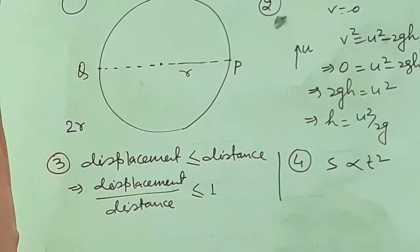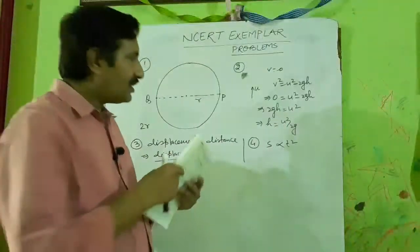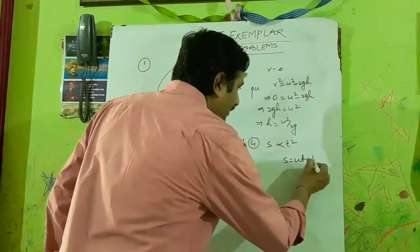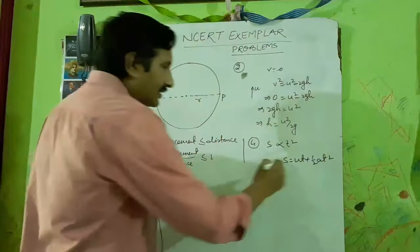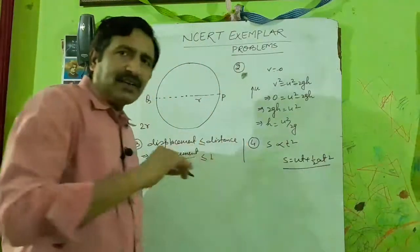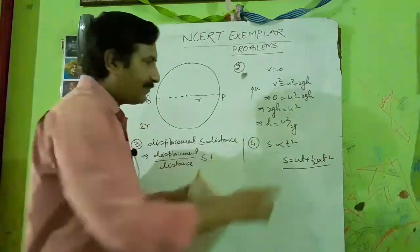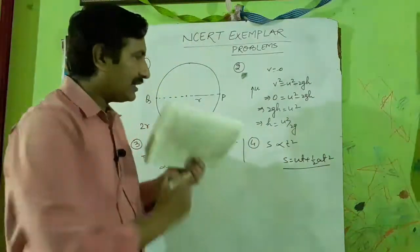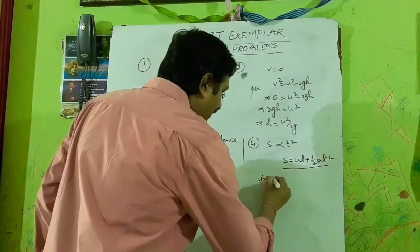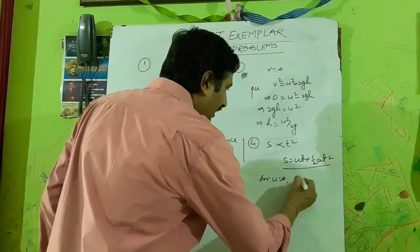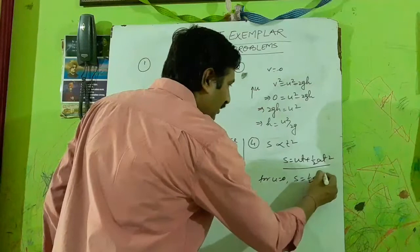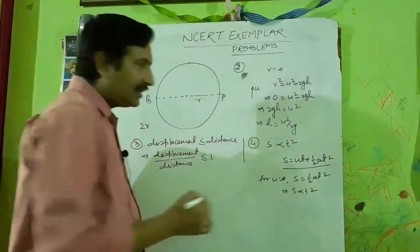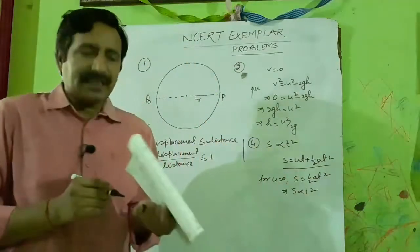Recall the formula S = ut + ½aT². This is valid only if acceleration a is constant. If u = 0, then S = ½aT², which means S is proportional to T². This is possible only when acceleration is constant.